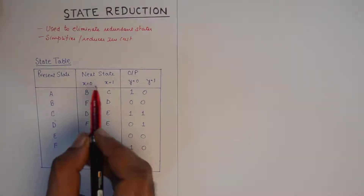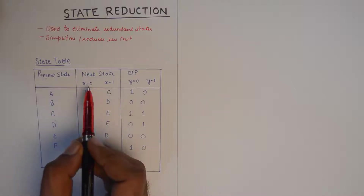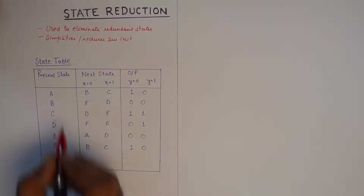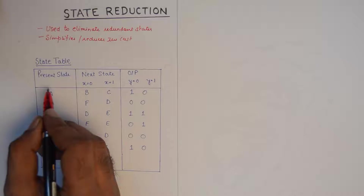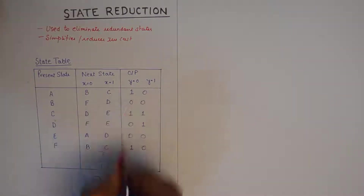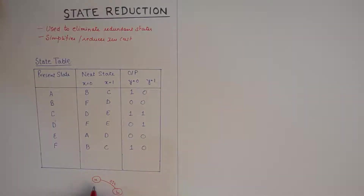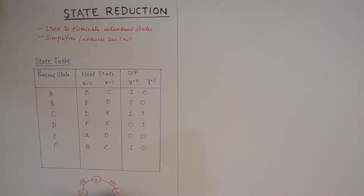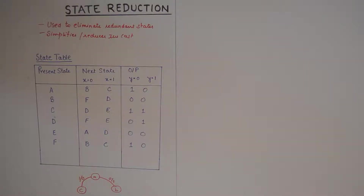Every state table will be given with the present state, and the next state is achieved by giving an input 0 or 1. For example, in the state transition diagram for this table, state A would go to state B on a 0 and give an output of 1, and on the application of input 1 it would go to state C and give an output of 0. That is how state transition tables are made.